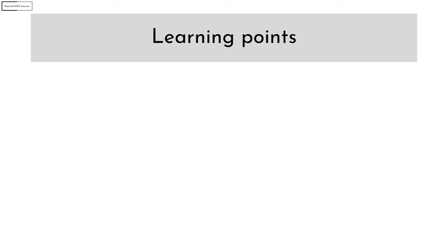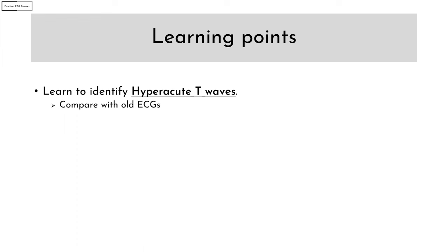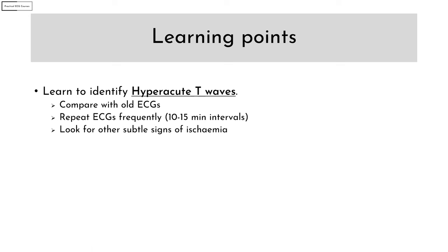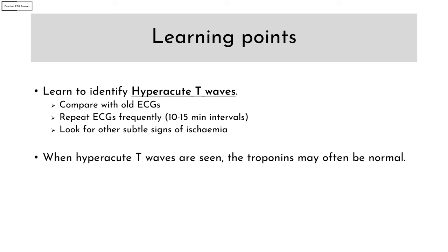There are several learning points from this case. Learn to identify hyperacute T waves — it is now formally a STEMI equivalent. If you have any doubts, compare with the old ECG and repeat ECGs at frequent intervals. Look for other subtle signs of ischemia. When hyperacute T waves are seen on an ECG, troponins may be normal as it is too early in the disease process. Learn the ECG findings of subtle ACS.